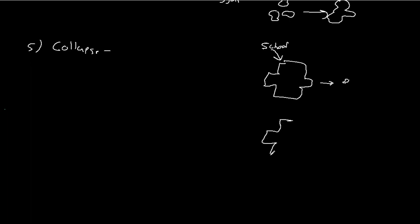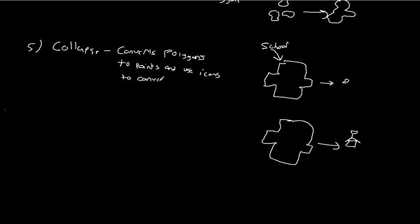So instead of having the school here, we can collapse that down to a single point, which we can then use an icon at the centroid. So collapse converts polygons to points and typically uses icons to convey meaning. Typically you're going to convert a polygon to a point, and then you're going to use an icon to convey the meaning. So you're going to go from the boundary of the school down to a single point that represents the school.